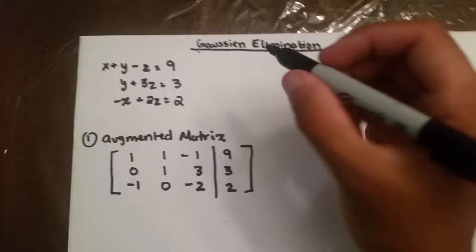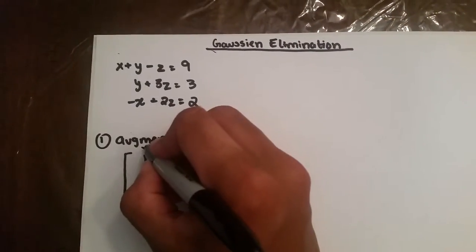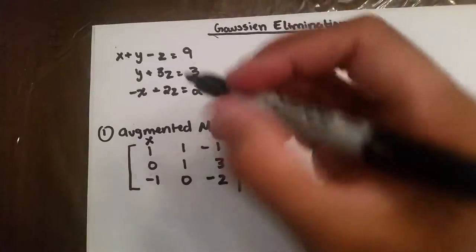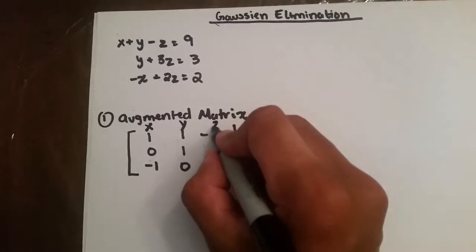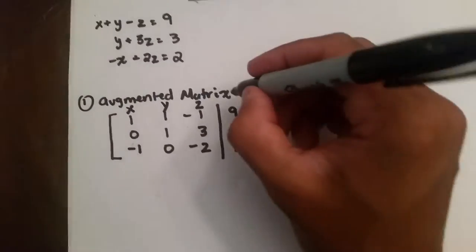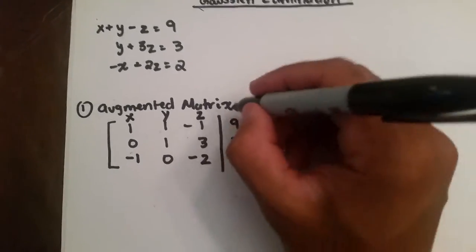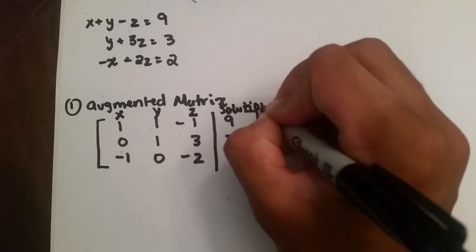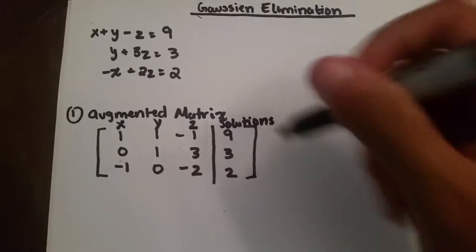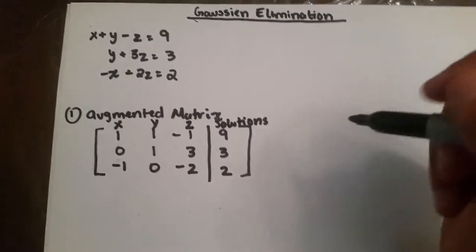Basically, in an augmented matrix, you take one column which will be your x's, you take the second column which will be your y's, and your third which will be z's, and the right side, some people call it constants, I like to call them solutions, because it's easy to know what they are if you name it solutions.